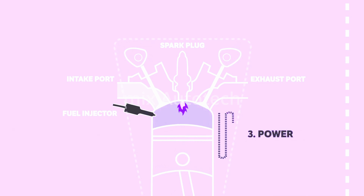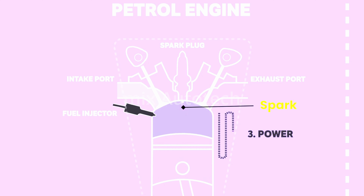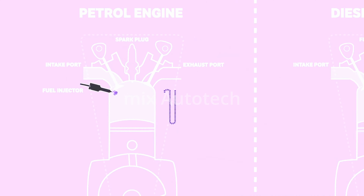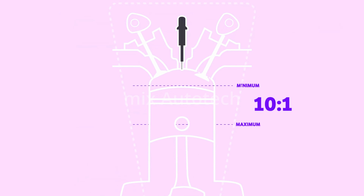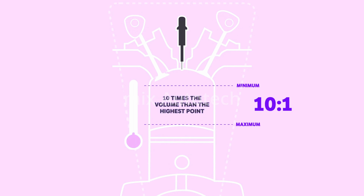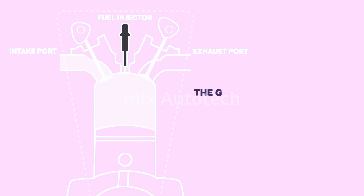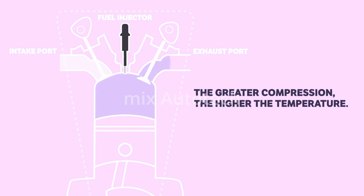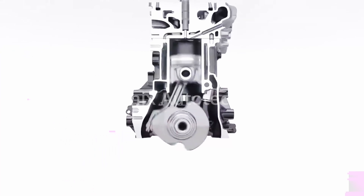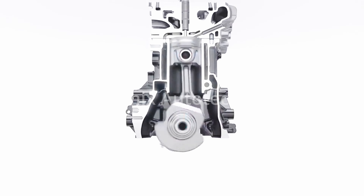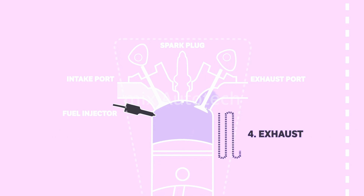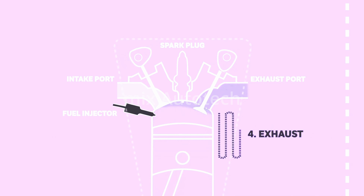Third, the power stroke: in gasoline engines, a spark from the spark plug ignites the compressed mixture, creating a controlled explosion that drives the piston down. Diesel engines, on the other hand, use compression ignition — a high compression ratio compresses the air-fuel mixture into a smaller space, increasing its temperature and pressure until the mixture ignites. The force of the explosion pushes the piston down with tremendous power, converting explosive energy into mechanical motion. Fourth, the exhaust stroke: the piston moves back up, expelling the spent gases through the exhaust valve.